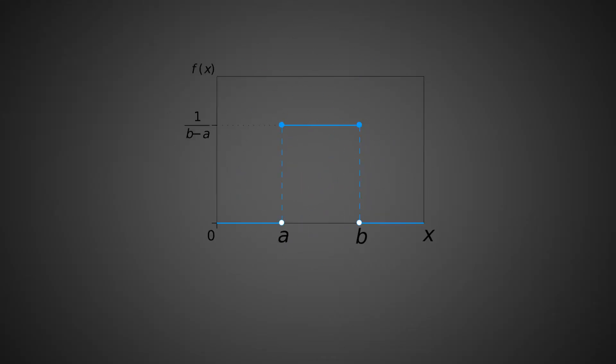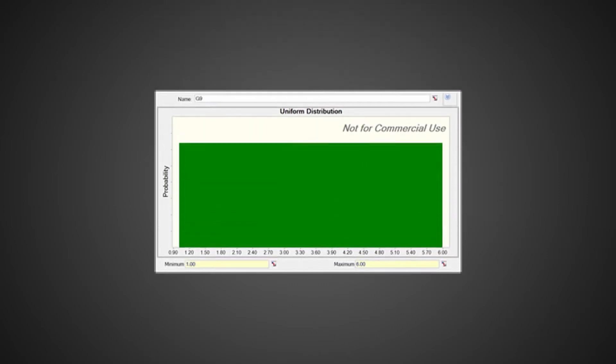The uniform distribution is the simplest probability distribution available in Excel. It is defined by a minimum value and a maximum value. All the values in this range have an equal or uniform probability. The shape of the distribution is therefore a rectangle. Here we see a uniform distribution with a minimum of 1 and a maximum of 6.